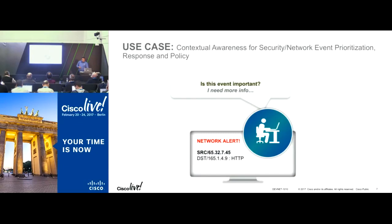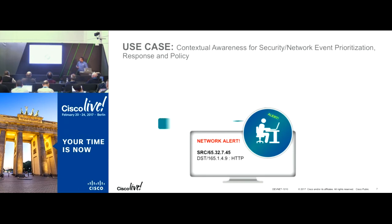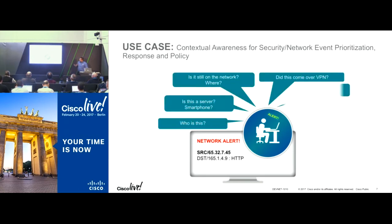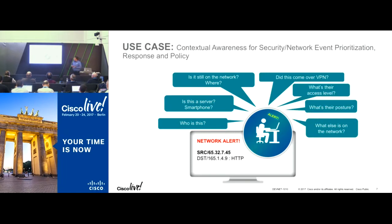The use case for identity awareness is this: in systems where you traditionally only get alerts on an IP address — source IP and destination IP — how do you answer these questions? Is this a server or a smartphone? Is that device still on the network? Did it come in via VPN? What is their posture? What else is on the network? All this is provided by ISE because ISE has that context about the network.